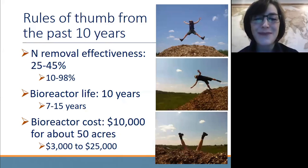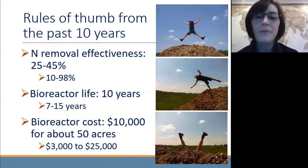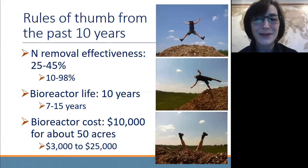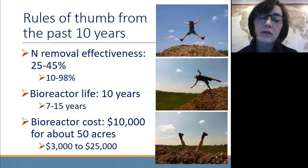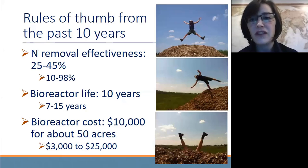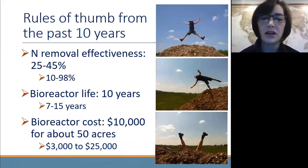The last rule of thumb is one of the most important factors for most of our farmers: how much is this going to cost? Rule of thumb — $10,000 to do a bioreactor treating about 50 acres. We worked with a farmer this summer who did all his own excavation and got free wood chips — he did it for less than $3,000 treating about 50 acres. On the other end, a private engineering firm on the east coast was upwards of $25,000 for 50 to 60 acres. So there's a big range depending on who you are and what you're interested in, but the nice round rule of thumb is $10,000 to treat 50 acres.